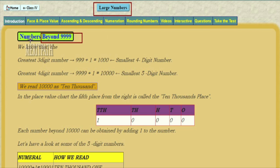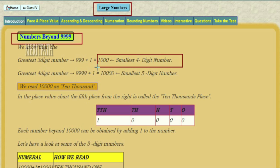Let's learn about large numbers — numbers beyond 9999. We know that the greatest three-digit number is 999. If we add one to this number, we get 1000. One thousand is a four-digit number and it's the smallest four-digit number. The greatest four-digit number is 9999, that means nine thousand nine hundred ninety-nine. If we add one to this greatest four-digit number, we get ten thousand, which is the smallest five-digit number.